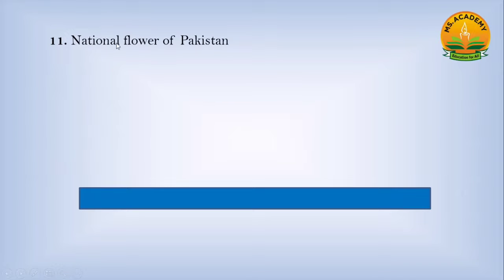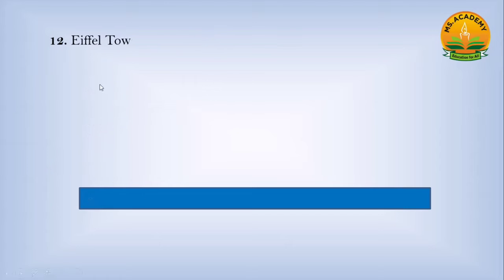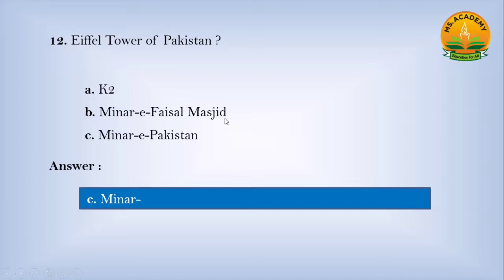National flower of Pakistan: option A Rose, option B None of these, option C Jasmine — answer is C, Jasmine. National tower of Pakistan: option A K2, option B Minar-e-Faisal Masjid, option C Minar-e-Pakistan — answer is C, Minar-e-Pakistan.